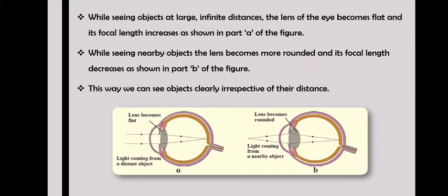This way, we can see objects clearly irrespective of their distance. Please remember how the eye lens becomes when it sees nearby objects versus distant objects.